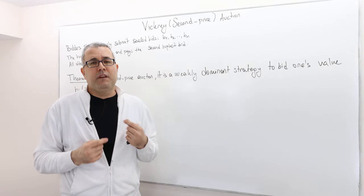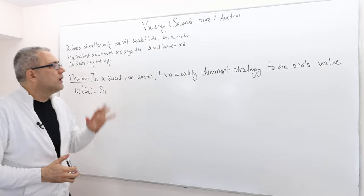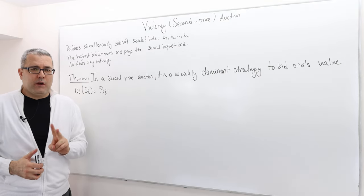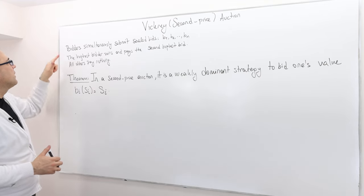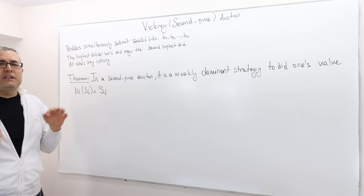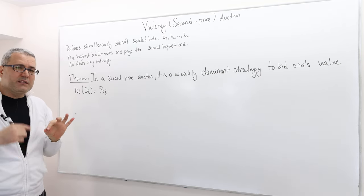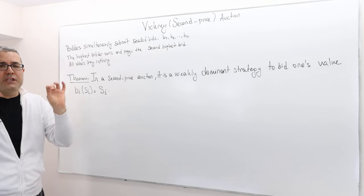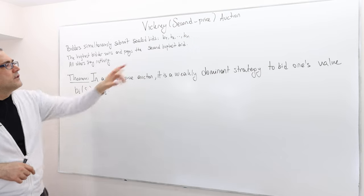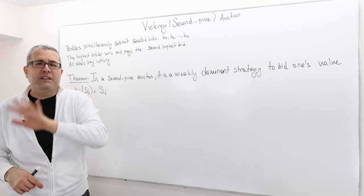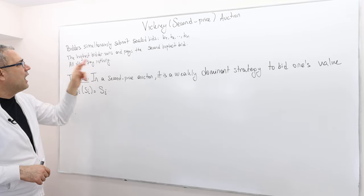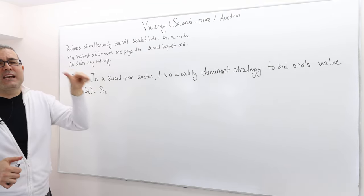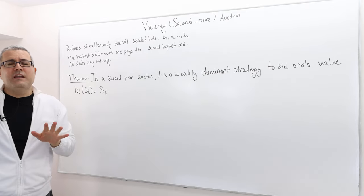This is the Vickrey, or the second price auction. So what are the rules? Remember, any auction has to tell us who is going to be the winner and who is going to pay what. Bidders simultaneously submit their sealed bids. Everybody simultaneously writes their bid on a piece of paper, seals it, and gives it to the auctioneer. The highest bidder wins the object and pays the second highest bid. All the others pay nothing.